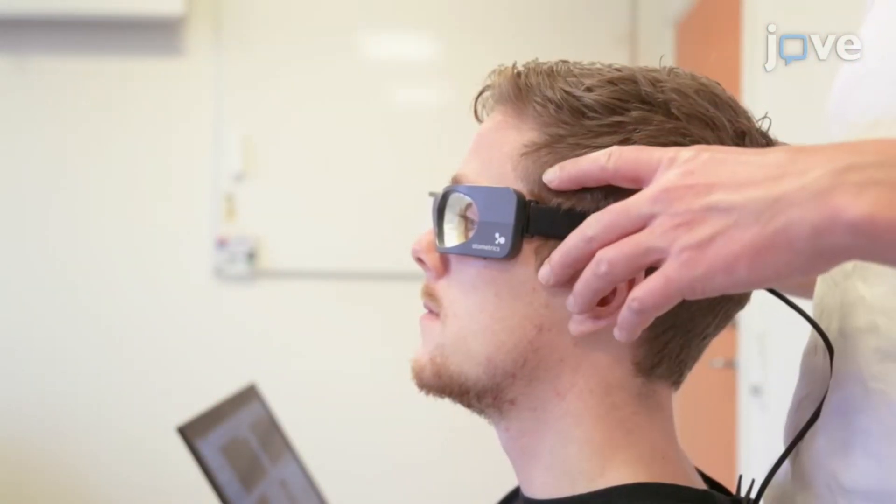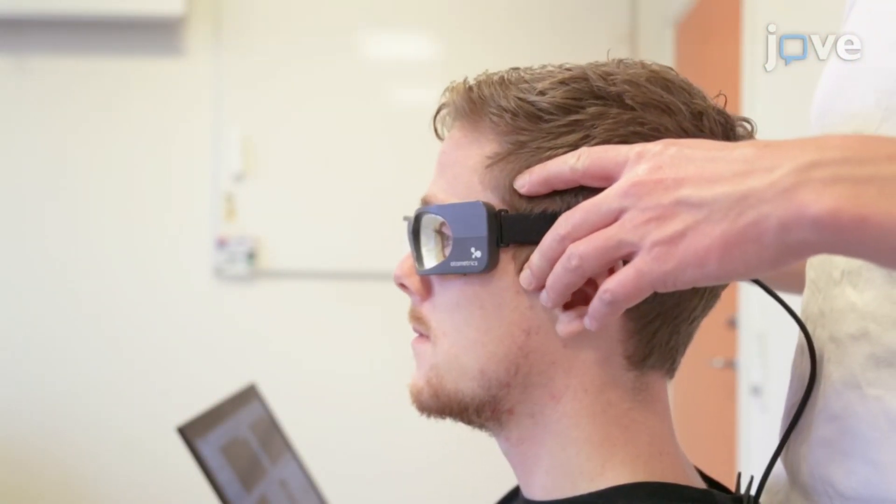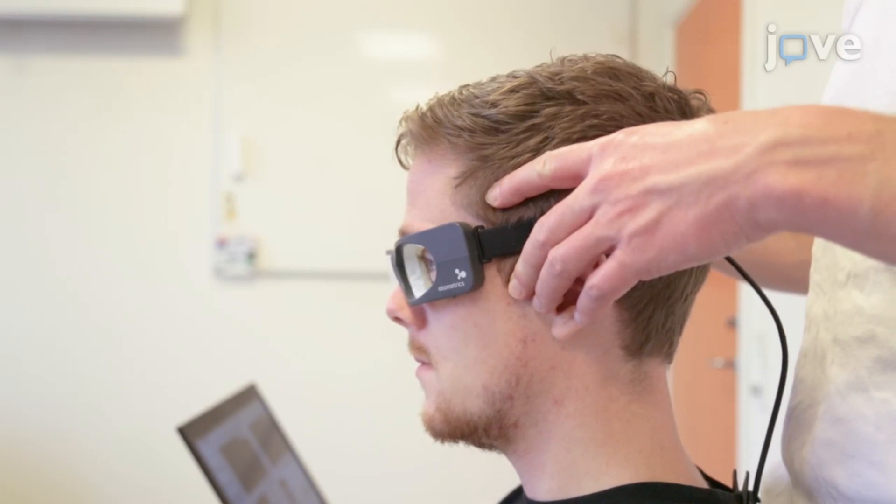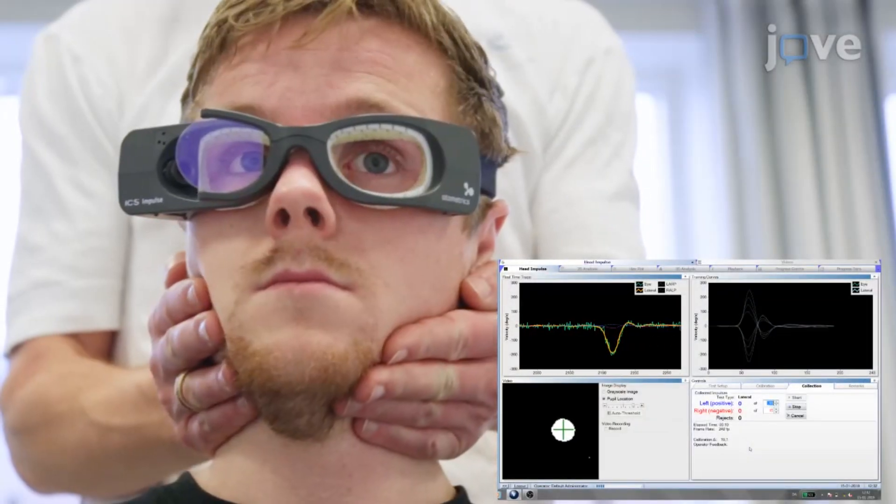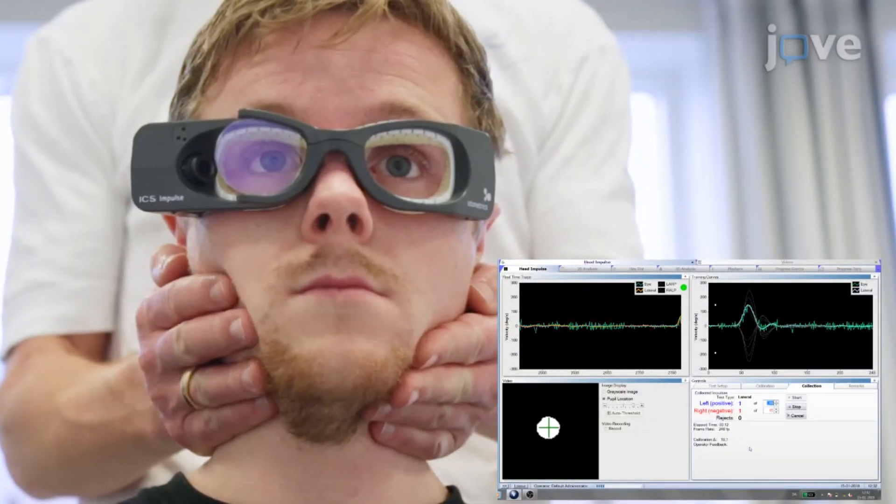Next, turn the participant's head 30 degrees forward in the pitch plane to position the horizontal SCCs completely horizontal, and deliver between 10 and 20 head impulses to each side.